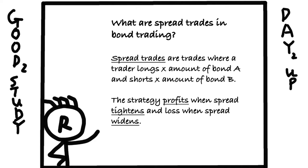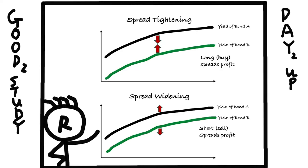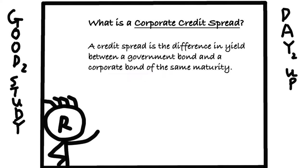We'll talk about bond valuations in our future videos. For now, all you need to know is what I mean by tightening and widening. Spread tightening means the spread between bond A and bond B narrows. Widening means the spread increases.